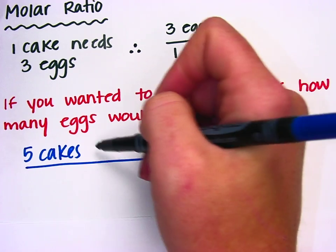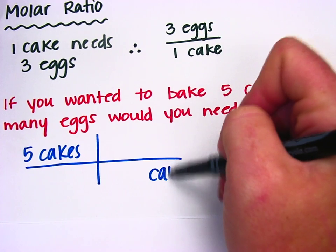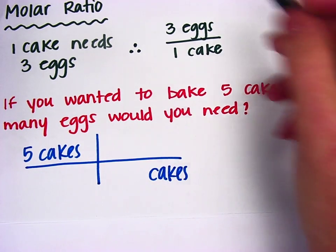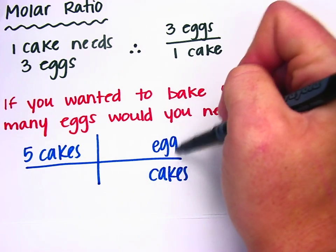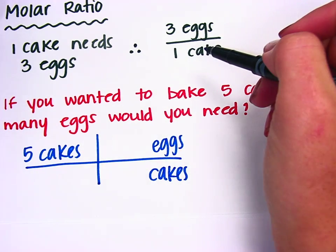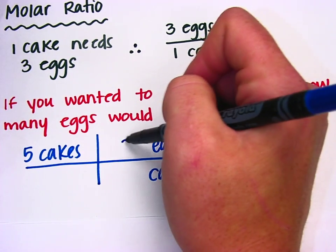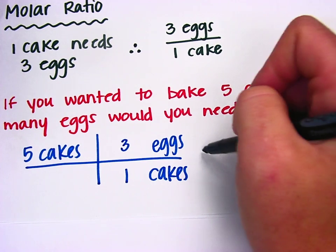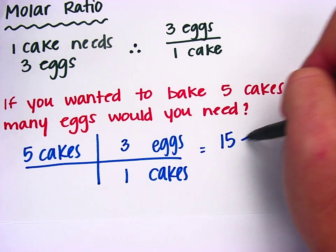I want to get rid of cakes, so I'll put cakes on bottom, and then I want to get to eggs, so eggs will go on top. This ratio up here tells us that there are three eggs in one cake, so five times three is 15 eggs.